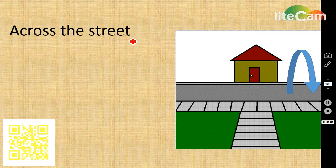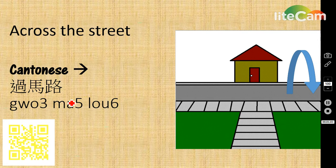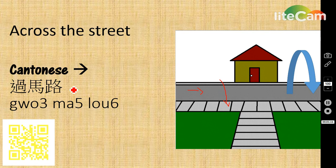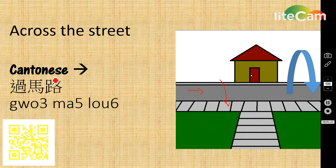Across this street is 過馬路. For the road where cars drive, we will call it 馬路. Crossing the road or crossing the zebra crossing, we call it 過馬路.